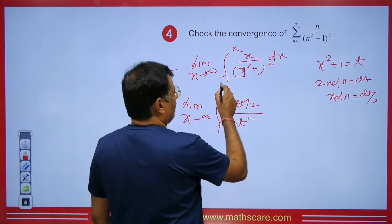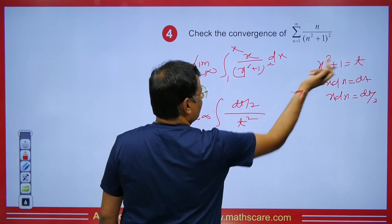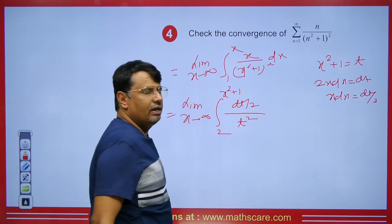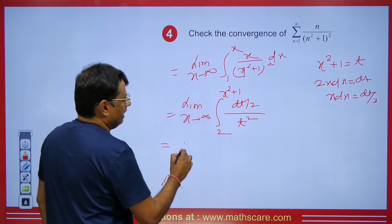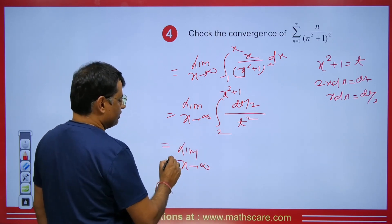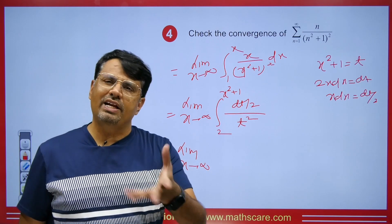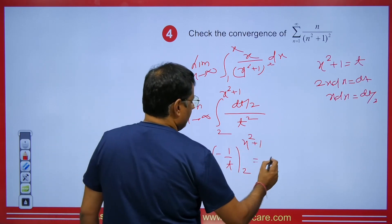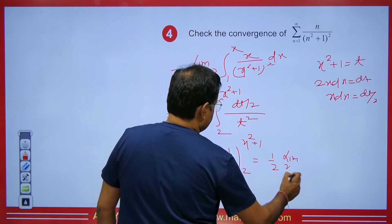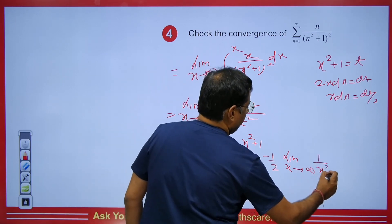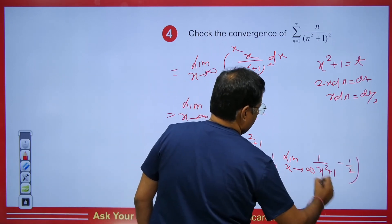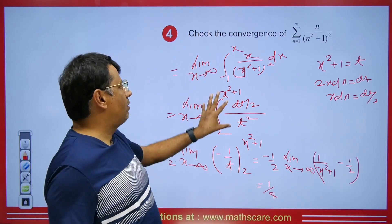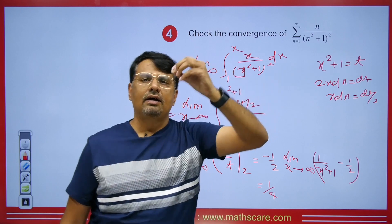When x=1, t = 1²+1 = 2, and when x tends to infinity, t tends to infinity. The integral becomes (1/2) ∫ dt/t² from 2 to x²+1. Integrating 1/t² gives −1/t, so we get (1/2)[−1/t] from 2 to x²+1. This gives (1/2)[−1/(x²+1) + 1/2]. When x tends to infinity, 1/(x²+1) tends to 0, so the value is (1/2)(1/2) = 1/4, which is finite. Therefore, this series is convergent.